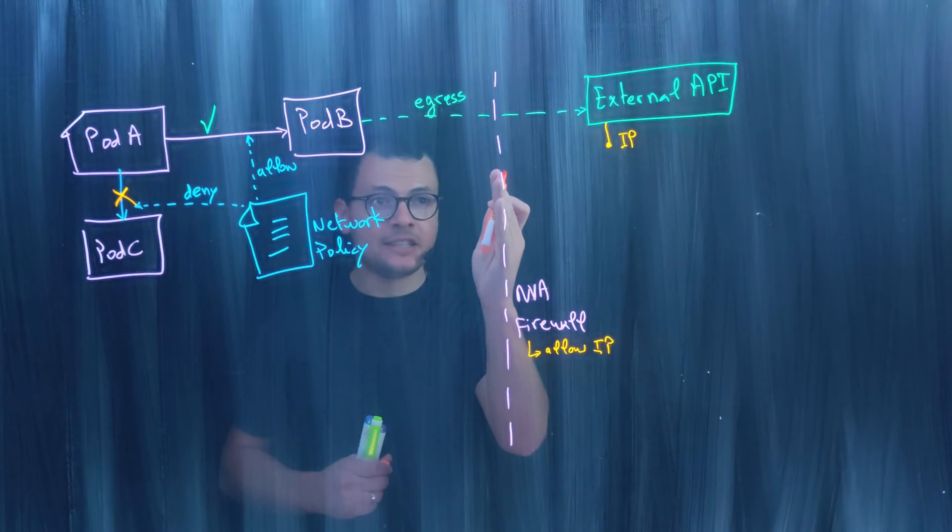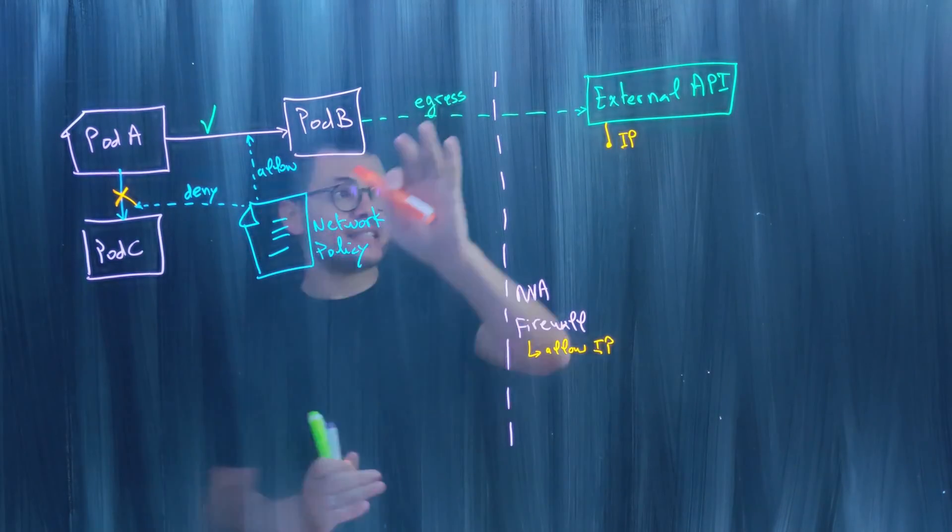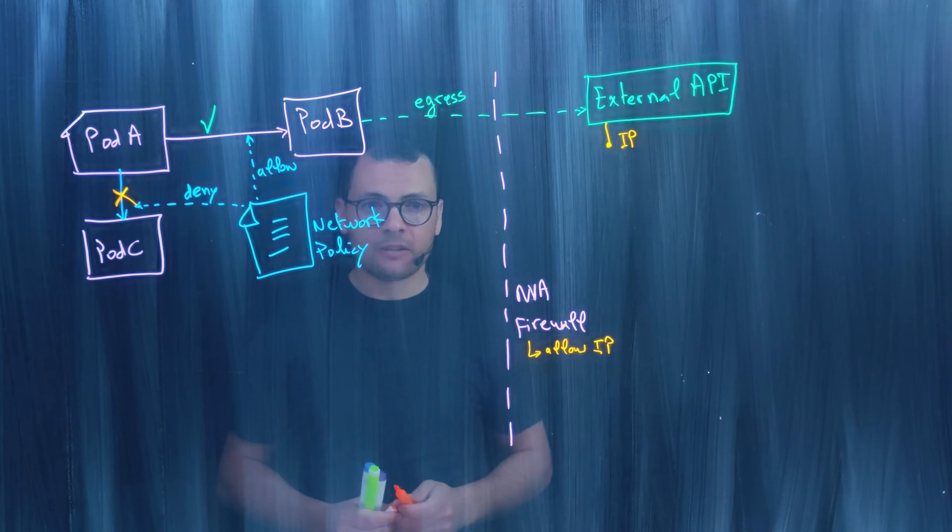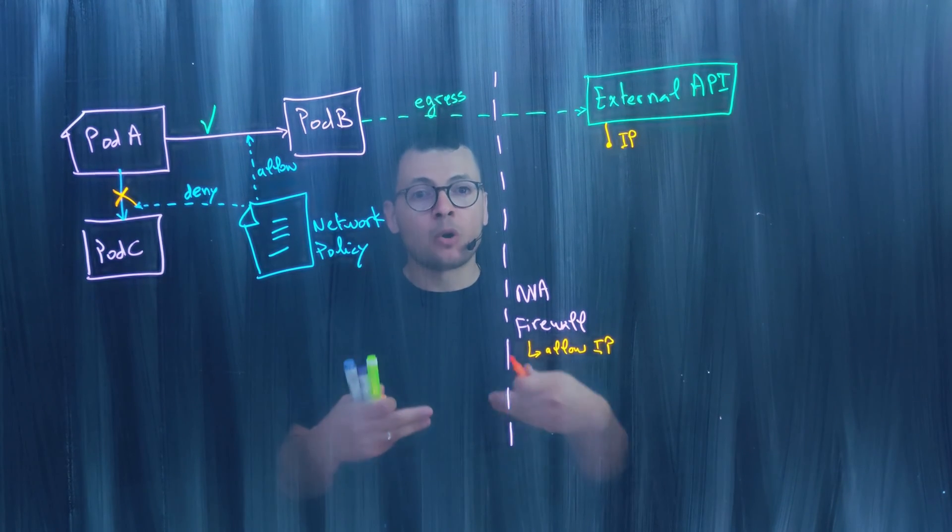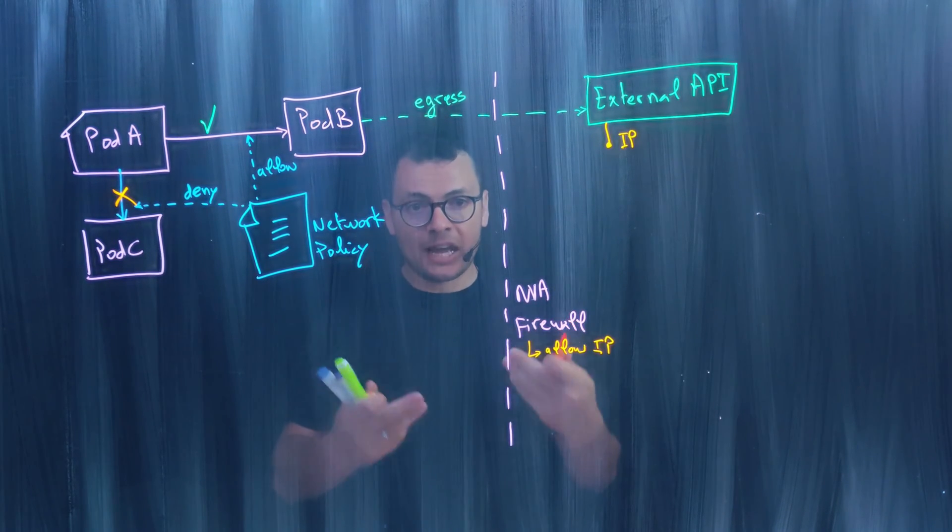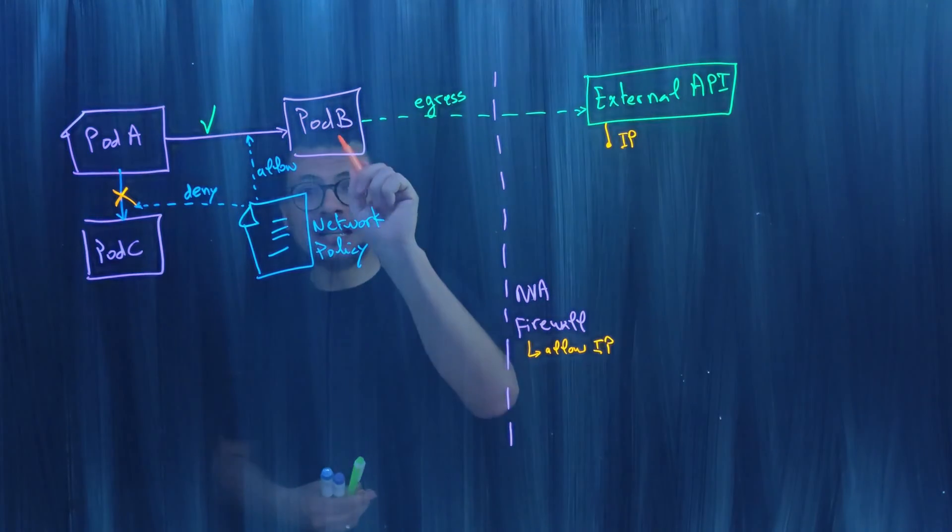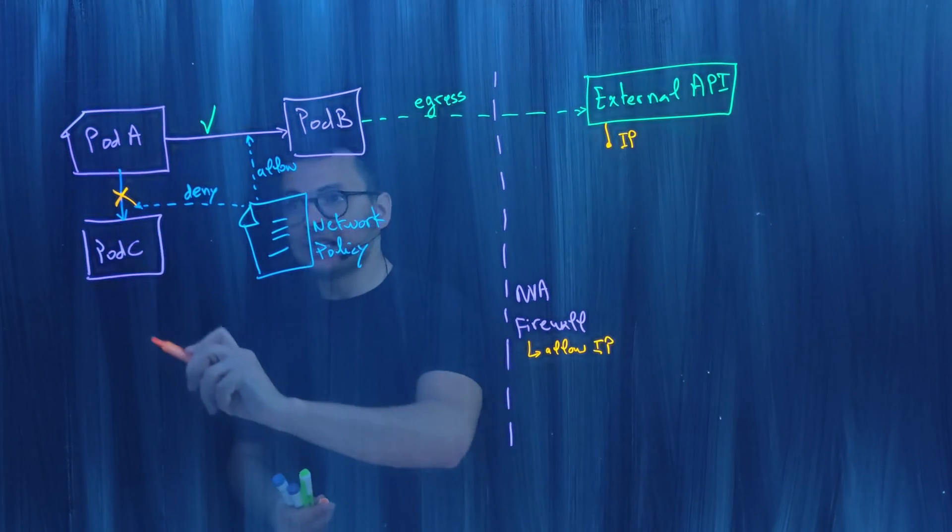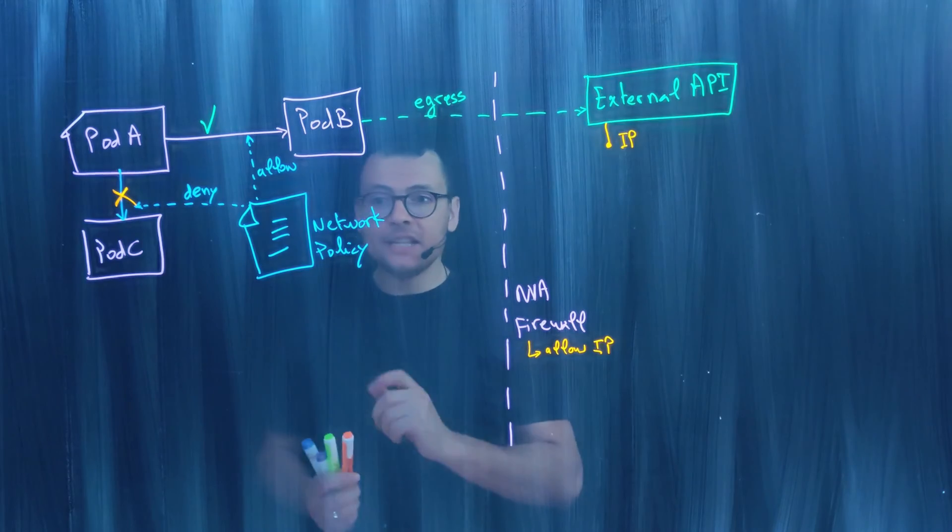Anything before this firewall would be able to access that external API. Here we want to have more fine-grained control access. We want to allow access for only Pod B and not Pod C and not Pod A.